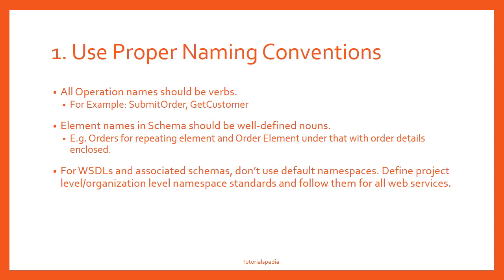For example, considering the same order processing scenario — if your service is expecting a list of orders as input, the root element should be 'orders' in plural, to tell the user that it is a list element. Inside that you can have an 'order' element, and under the order element you can have different elements specific to that order. Those elements can be of primitive types, for example an orderID which would be an integer or long value, as well as other order details and order items specific to your implementation.